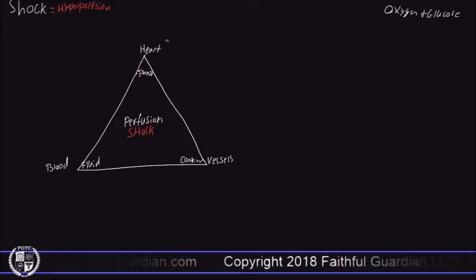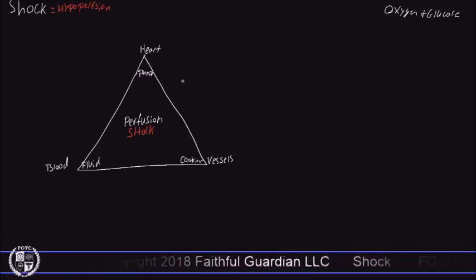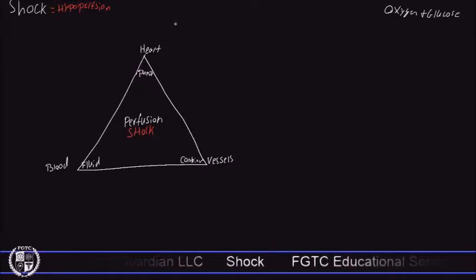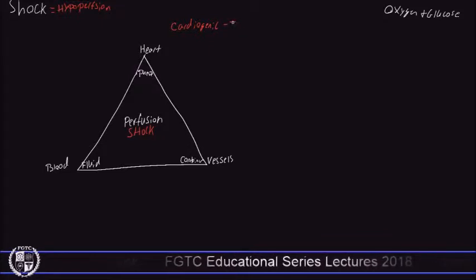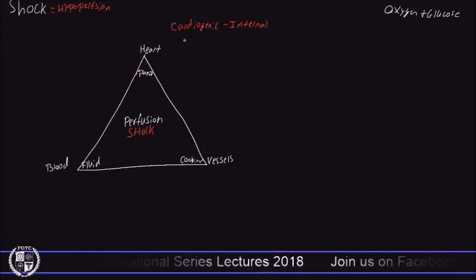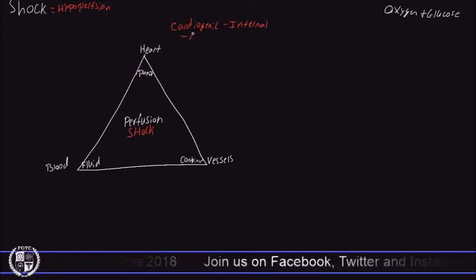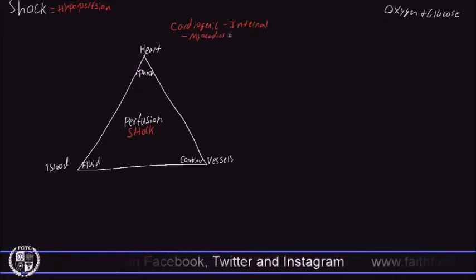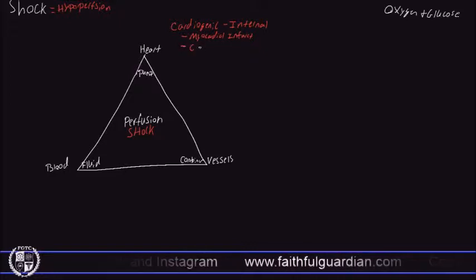There are two big types of shock that affect the heart and result in hypoperfusion. The first is cardiogenic shock, which is an internal function — there is something physically wrong with the heart itself. This occurs in two big circumstances: if someone has a myocardial infarction, which is a heart attack, or if someone is in an episode of congestive heart failure.